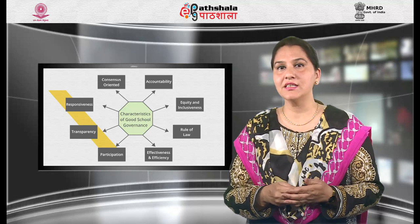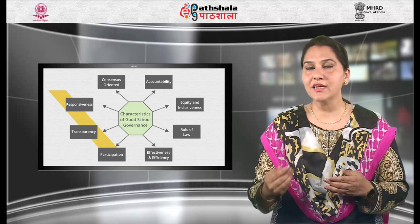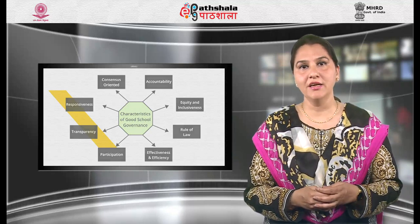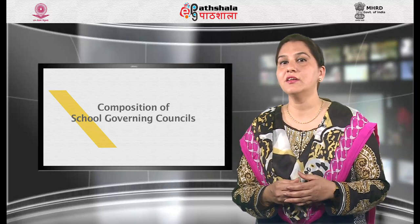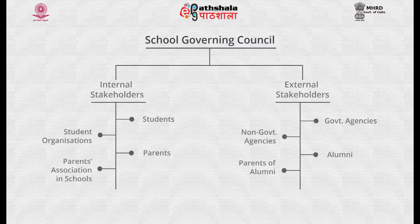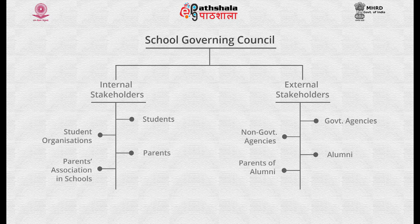As we have discussed the meaning of school governance and its characteristics, now I will explain the composition of the school governing council with the help of a flow chart. The school governing council consists of internal and external stakeholders. Internal stakeholders include students, student organizations, parents of students, and parents' associations in schools. External stakeholders include various government and non-government agencies, alumni, and parents of alumni.